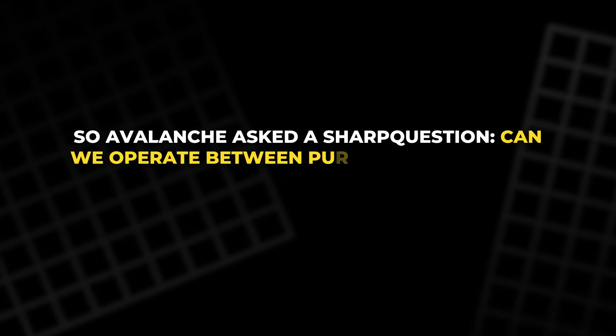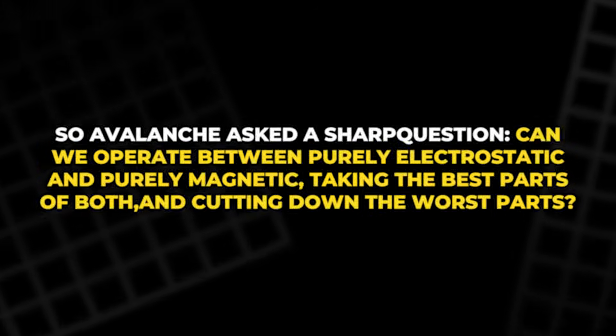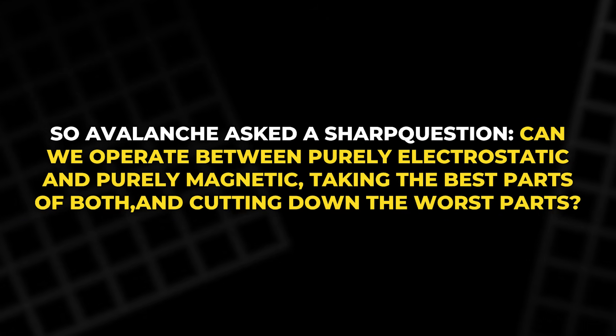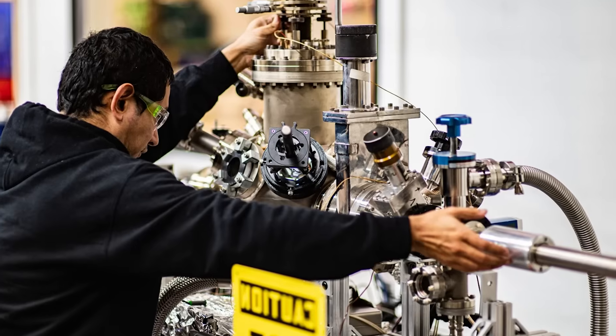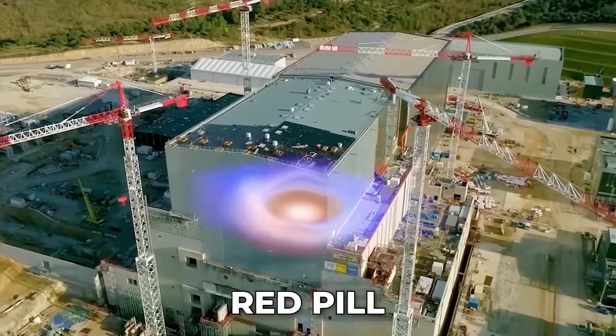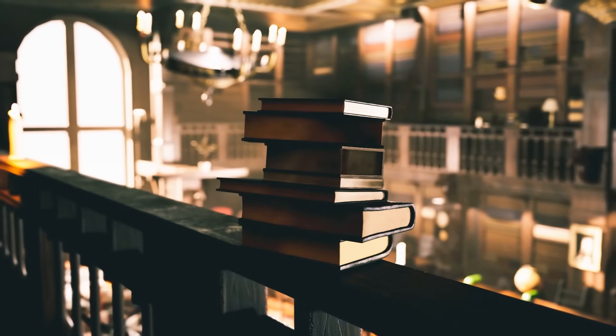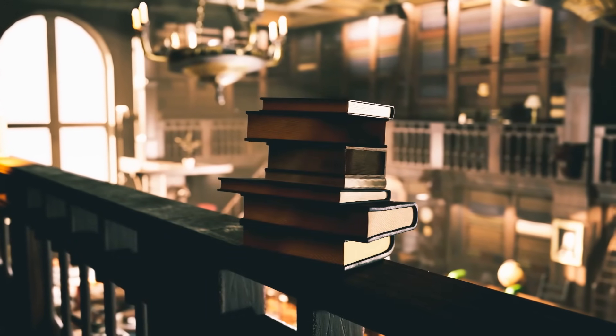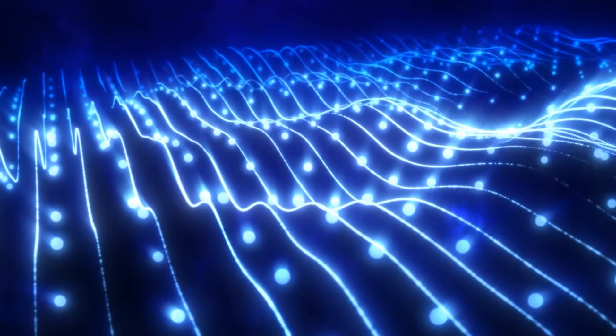So Avalanche asked a sharp question: Can we operate between purely electrostatic and purely magnetic, taking the best parts of both and cutting down the worst parts? They called their approach the Orbitron. One founder went red pill on fusion, basically running a self-directed PhD. He read books, papers, and old reports until the concept felt real. The mission became simple to say, and hard to do: Prove an electrostatic path can climb toward net energy.